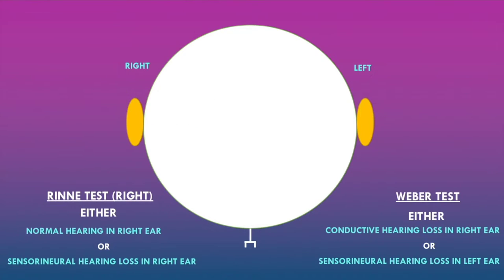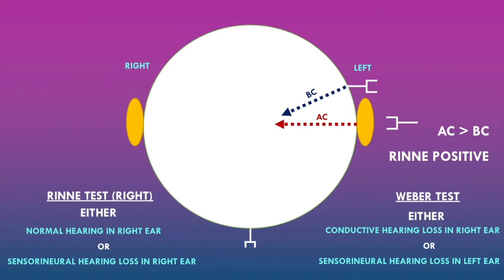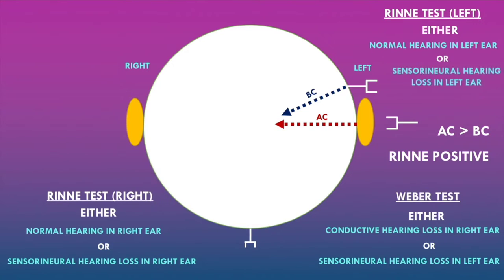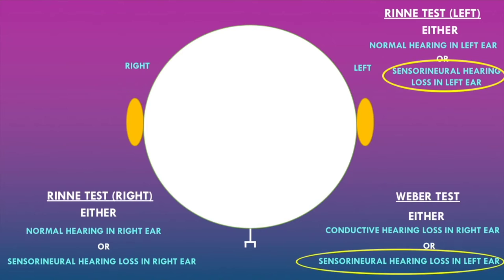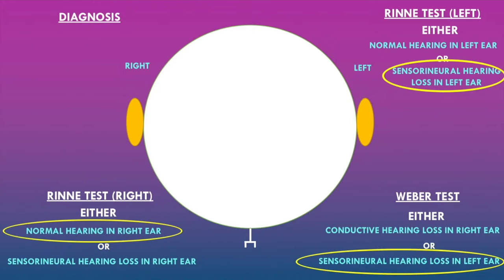The Rinne test in the left ear also showed air conduction greater than bone conduction — a Rinne positive test — indicating either normal hearing or sensorineural hearing loss in the left ear. In the left ear, the Weber test and Rinne test both agree that there is sensorineural hearing loss. In the right ear, the Weber test confirmed no pathology, so there is normal hearing. The overall diagnosis is sensorineural hearing loss in the left ear and normal hearing in the right ear.